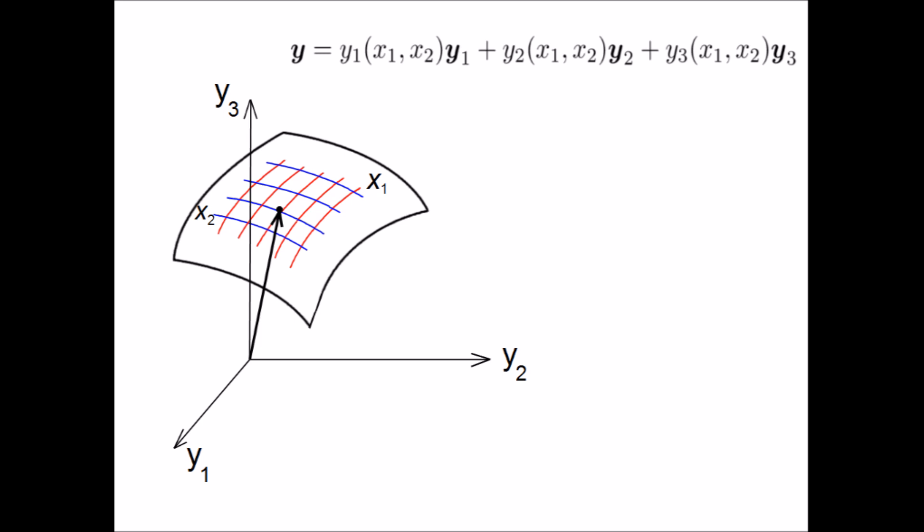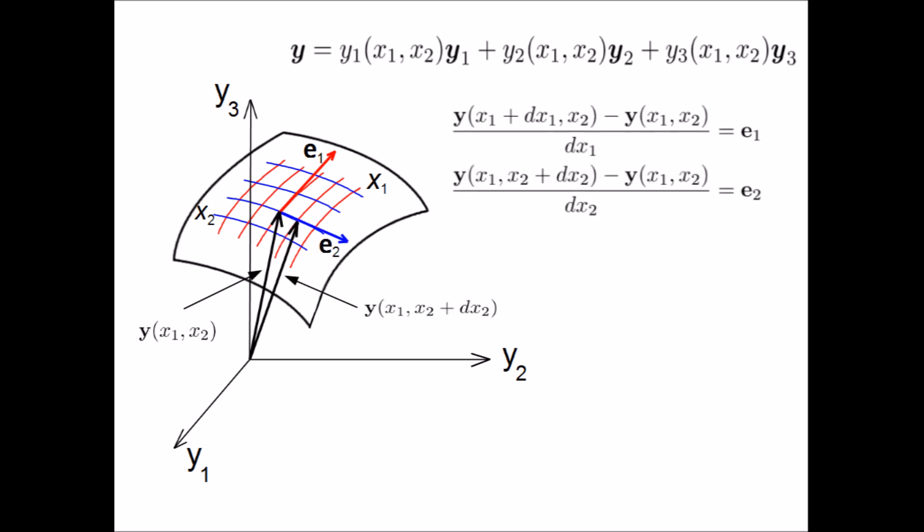Having y in this form makes it possible to define a tangent plane at every point on the surface. Simply shift y an infinitesimal distance dx1 along x1, subtract the shifted vector from the original one and divide by dx1. What you get is a tangent vector along x1. Let us call it e1. Repeat the same procedure for x2 and you get a tangent vector e2.